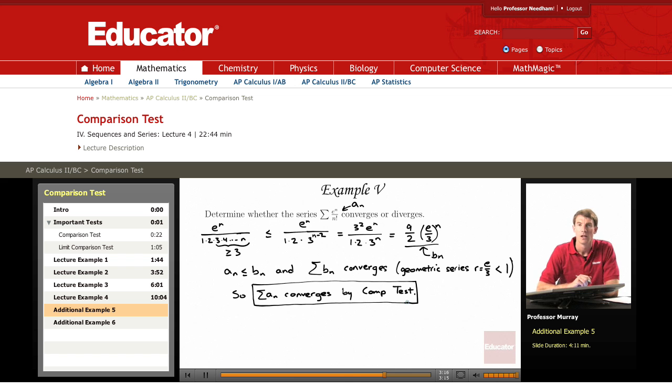So now it should be evident why I cut things off between 2 and 3 here. I was kind of looking ahead to this common ratio. I knew that e is about 2.7.